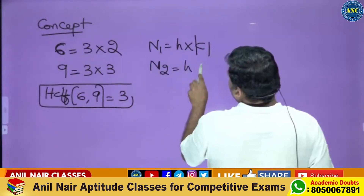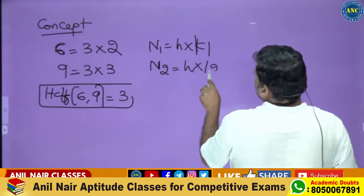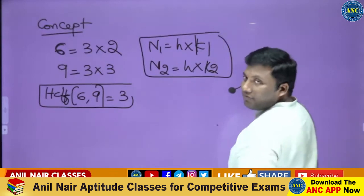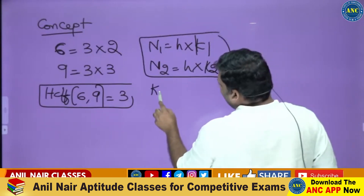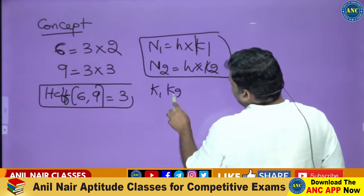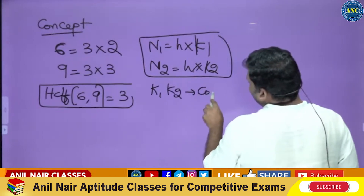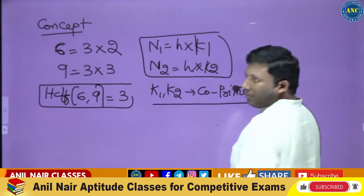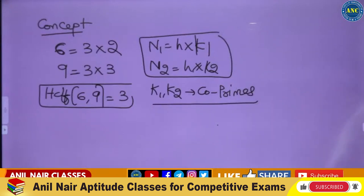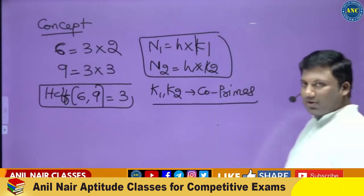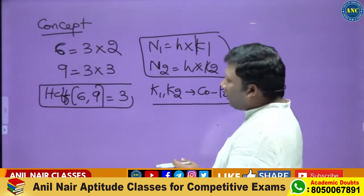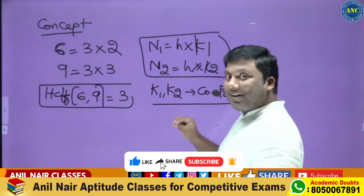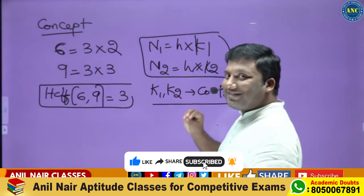So n1 can be written as h·k1 and n2 as h·k2, where k1 and k2 are co-primes. Now listen very carefully — we will use this concept in finding the LCM for an unordered pair.